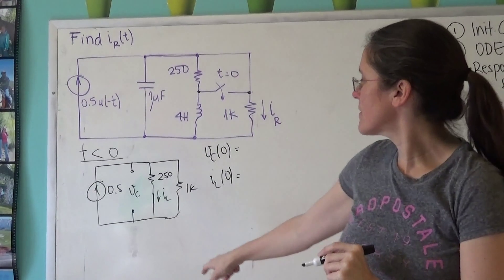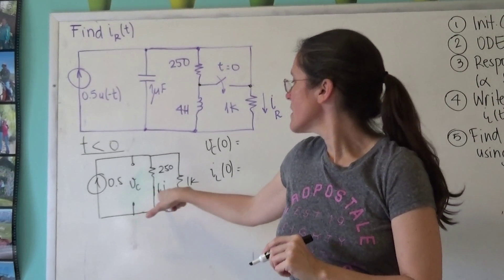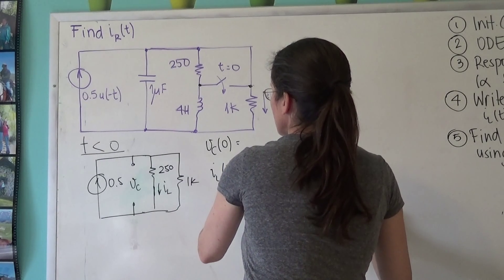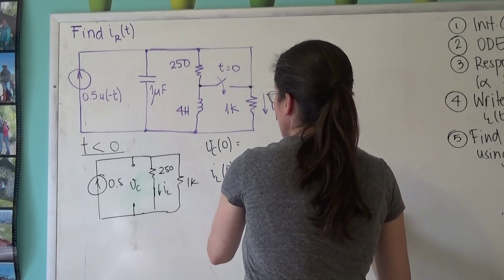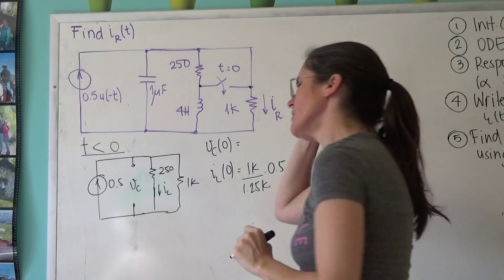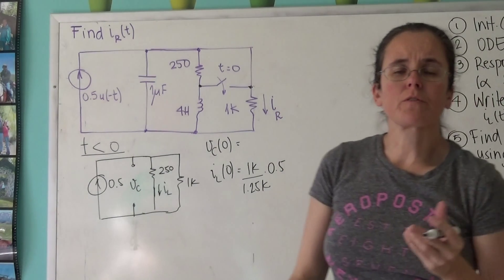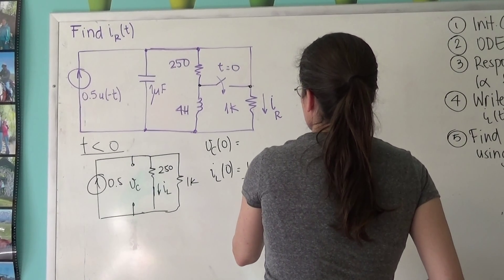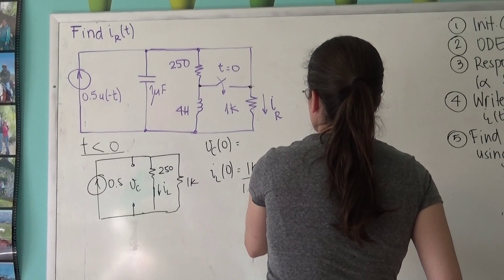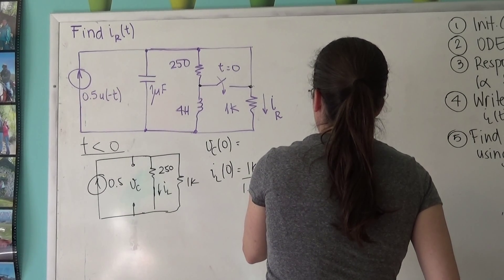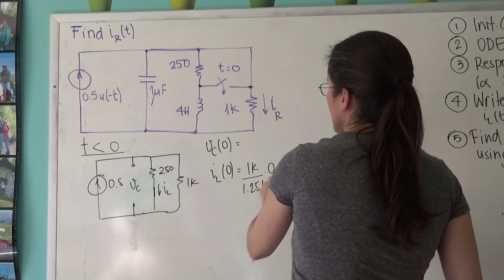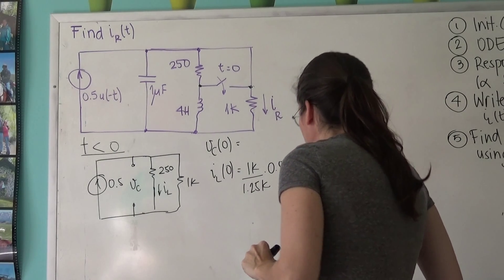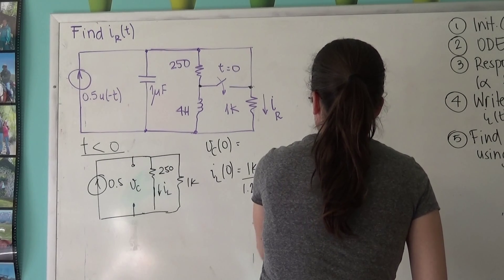And now look, this is current division. So really, the current here, IL, is 1k divided by 1.25k times 0.5. So 1 times 0.5 is 0.5 divided by 1.25, because these two k's cancel. And I'm going to cheat here and say that it's 0.4 amps.